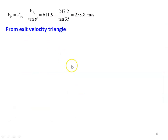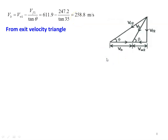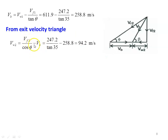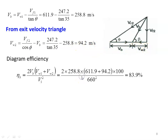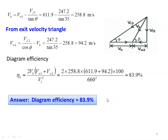Blade speed VB equals VW1 minus VF1 divided by tan theta, substituting gives 258.8 meters per second. From the exit velocity triangle, VW2 equals VF2 cos φ divided by cos φ minus VB, equal to 94.2 meters per second. Diagram efficiency equals 2 VB(VW1 + VW2) divided by V1², which is 2 into 258.8 multiplied by (611.9 plus 94.2) into 100 divided by 660², equal to 83.9 percent.